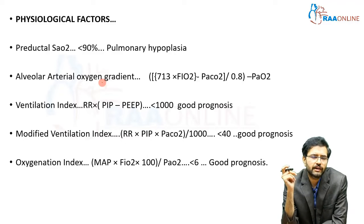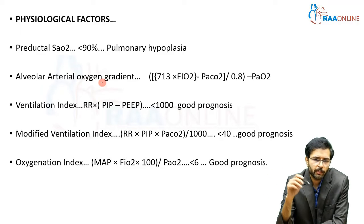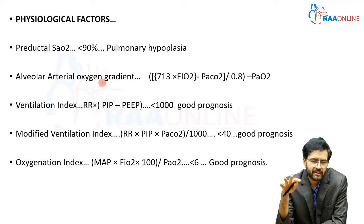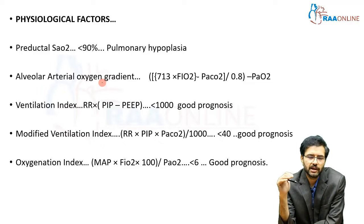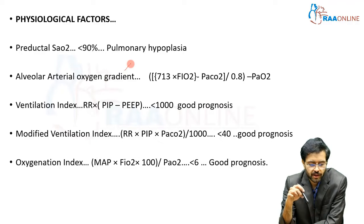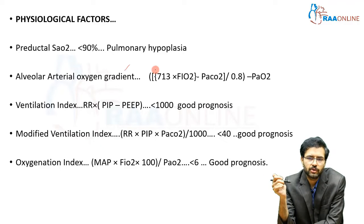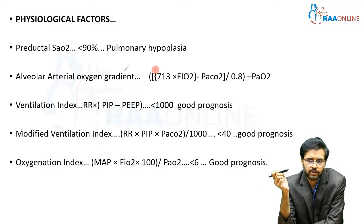There are also physiological prognostic factors. A pre-ductal oxygen saturation of less than 90% indicates severe pulmonary hypoplasia. Four important physiological indices help assess the child's status. The first is the alveolar arterial oxygen gradient, calculated as 713 multiplied by FiO2, minus the arterial partial pressure of carbon dioxide divided by 0.8, minus the partial pressure of oxygen.